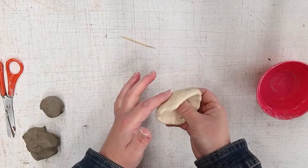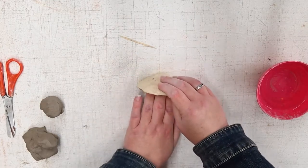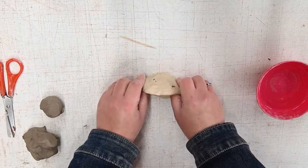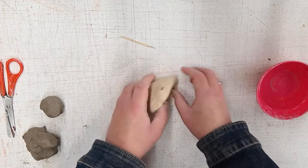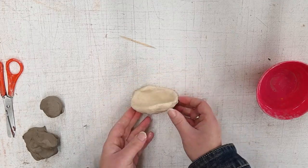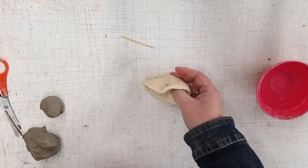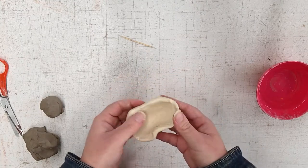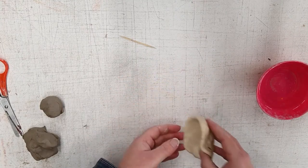Gently press one side of the bowl onto a flat surface like this so that your monster mouth will sit up. So we're going to set the base of our monster mouth aside for now.